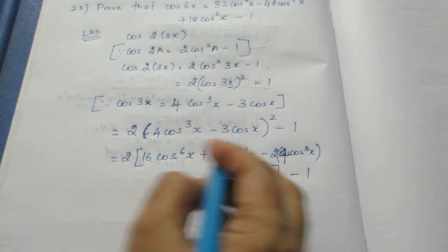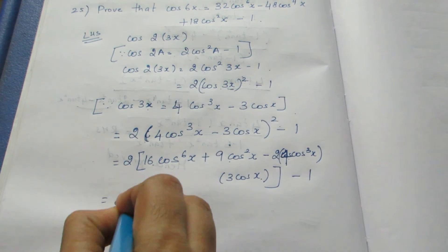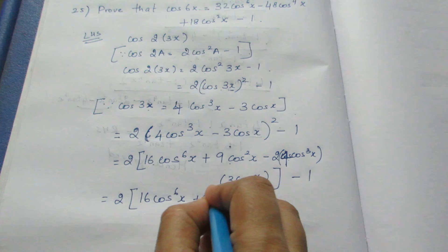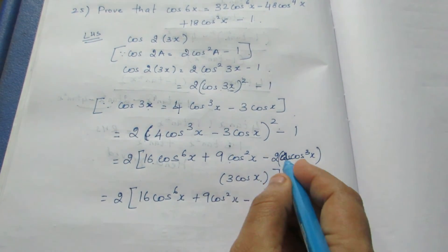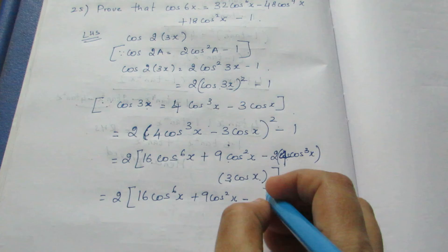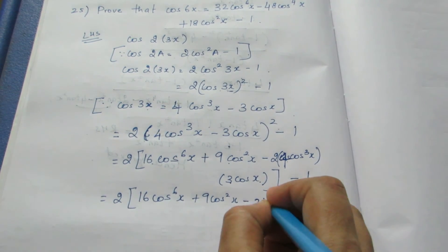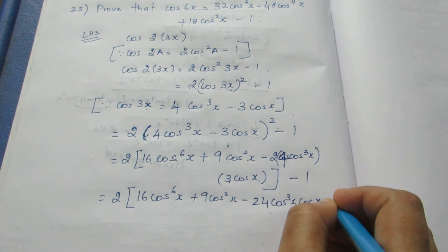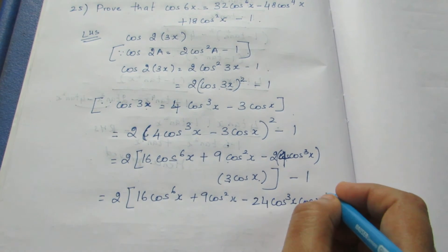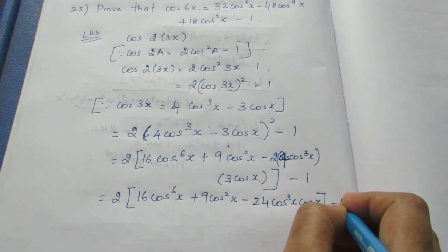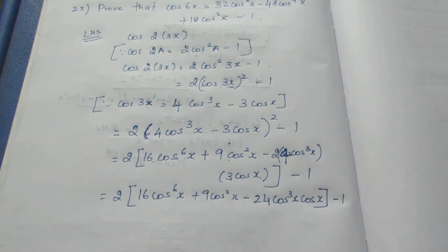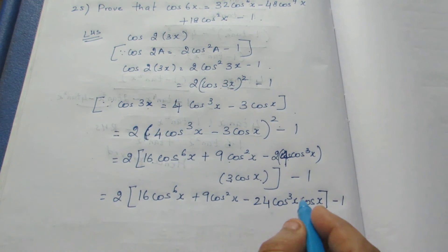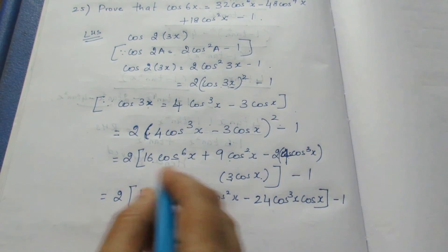Now I am going to solve this first: 2 into (16 cos⁶x plus 9 cos²x minus 24 cos³x times cos x) minus 1. We can multiply because the base is same, the power will become 4.